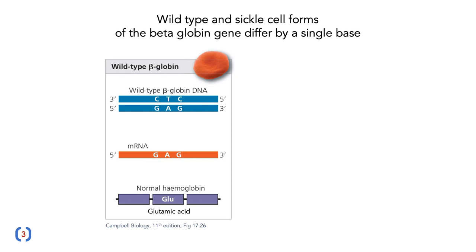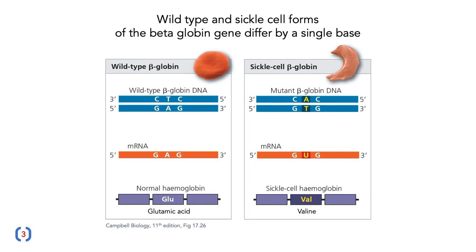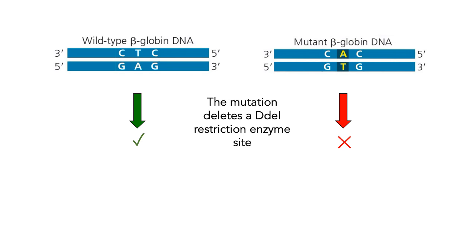What does this look like genetically? The wild-type and sickle cell forms of the beta-globin gene differ by a single base. In the wild-type, the codon is GAG in the DNA, which becomes GAG in the mRNA, encoding a normal hemoglobin containing glutamic acid. In the sickle cell allele, instead of GAG you have GTG in the DNA. Since thymine changes to uracil moving from DNA to RNA, the mRNA codon is GUG, which encodes valine. So there is a single amino acid change from glutamic acid to valine.